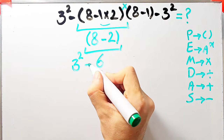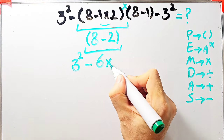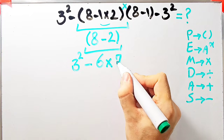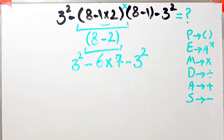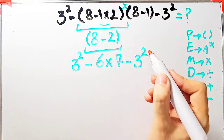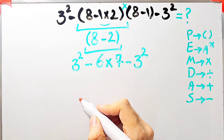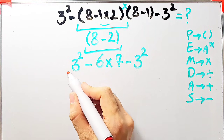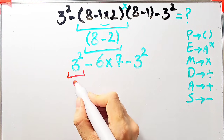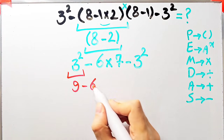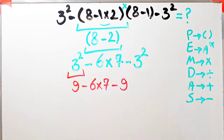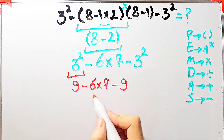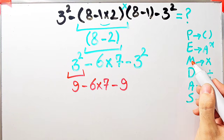Now the question is: 3 to the power of 2, minus 6, times open parenthesis 8 minus 1 close parenthesis, which equals 7, minus 3 to the power of 2. We have exponent, subtraction, and multiplication. First simplify the exponents: 3 to the power of 2 equals 9. So now: 9 minus 6 times 7, minus 9. Multiplication has higher priority than subtraction.